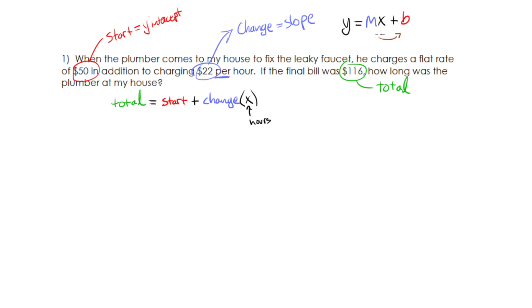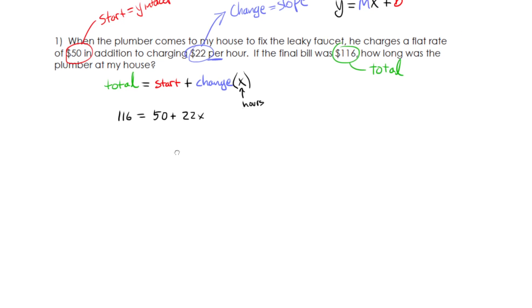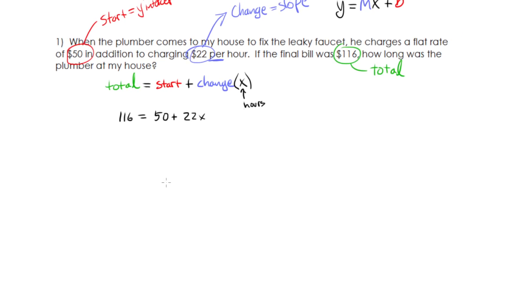So let's go ahead and put my numbers in here. So my total is 116 equals 50 plus 22x. Now you can solve this. We can solve this in another video. Right now, we are just setting up our equations. That's all we're doing.